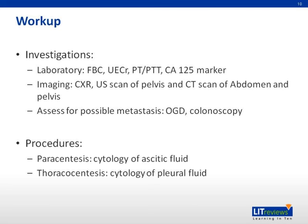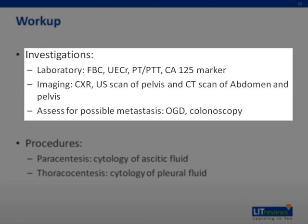The workup for Meigs' syndrome is similar to the workup for ovarian cancer. For blood investigations, a full blood count, urea electrolyte panel, and PT-PTT are ordered to assess the patient's fitness for surgery. Blood levels of the tumor marker CA-125 should also be ordered, as this marker may be elevated in Meigs' syndrome. Imaging investigations include a chest X-ray to assess the extent of pleural effusion, cardiac function for surgery, and to look for the presence of any lung metastasis.